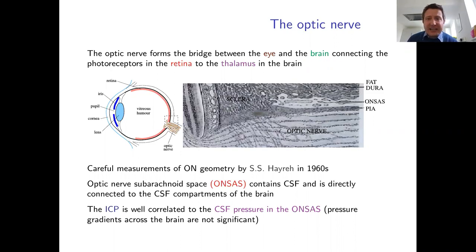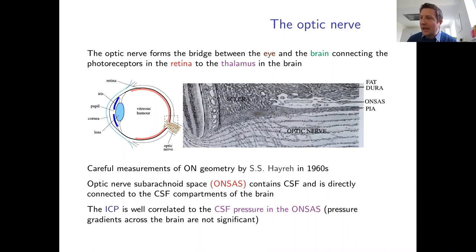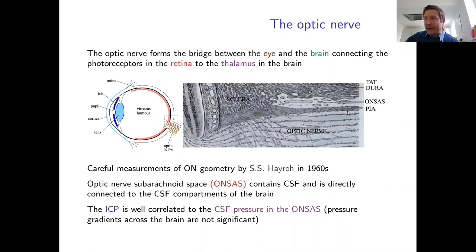Careful measurement of the optic nerve and the blood vessels passing through it was not really undertaken until the 1960s. From a series of papers beginning around 1960, very careful post-mortem measurements of optic nerve properties, vessel sizes, and geometry were made. From that work it became clear that the optic nerve has a region of nerve fiber tissue inside, with a meningeal region surrounding it.